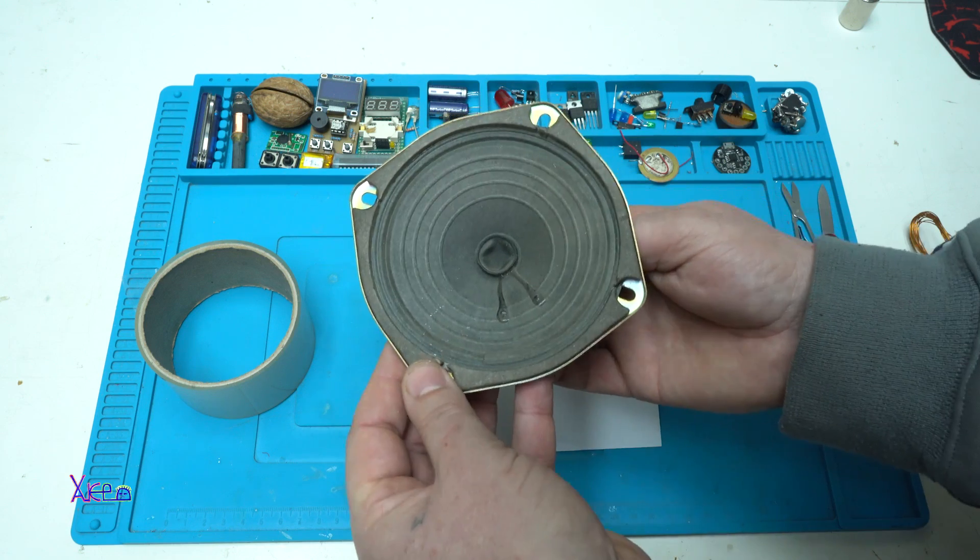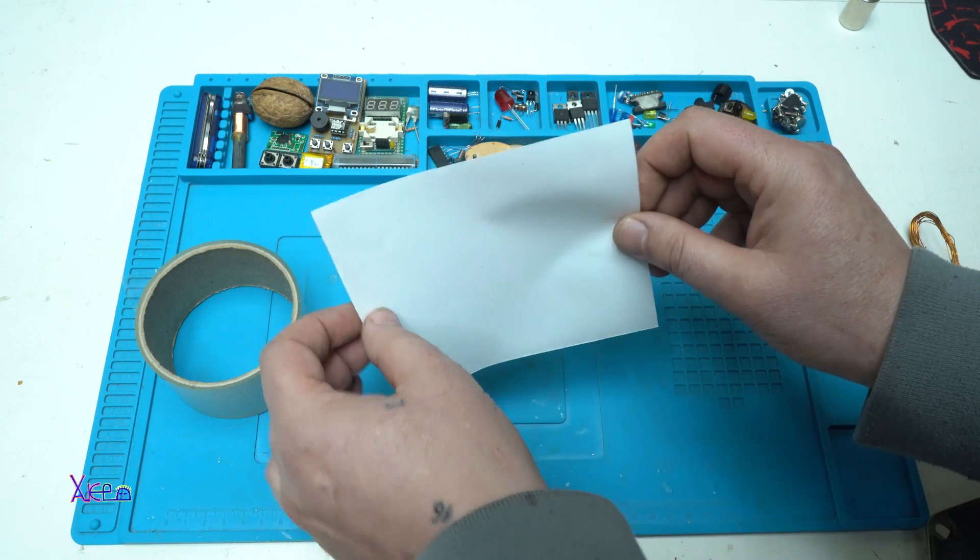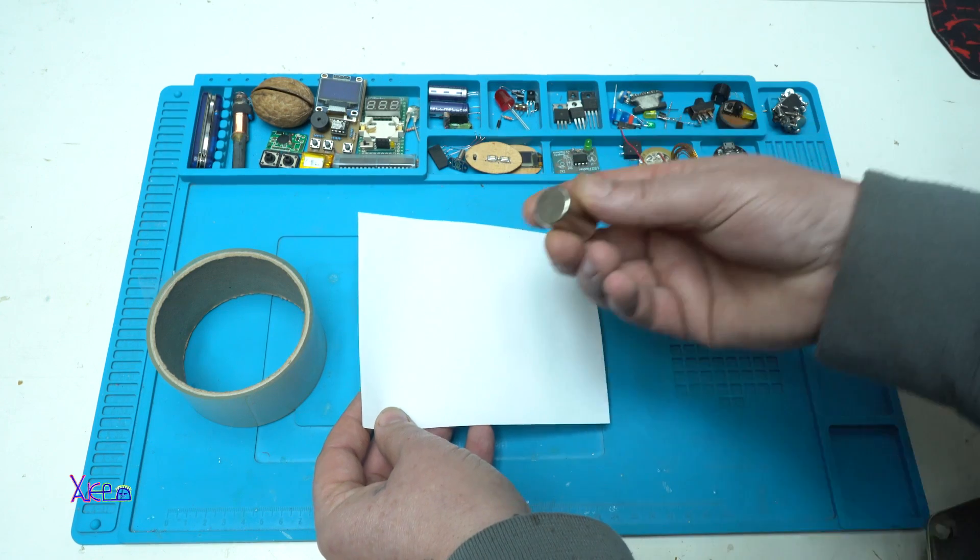But in today's video I will try to make a simple speaker using only clear tape, paper, copper wire, and a magnet.